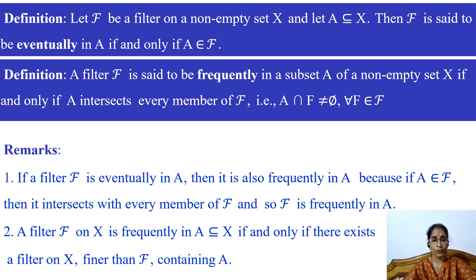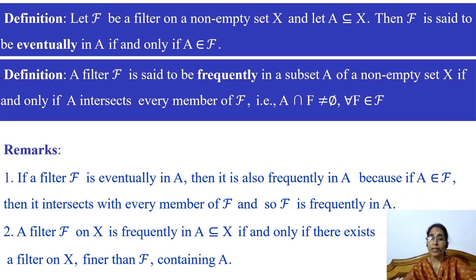Now we have two remarks. Remark one: if a filter F is eventually in A, then it is also frequently in A. Because if A belongs to F, then it intersects every member of F. We know that any intersection of any two members of F is non-empty. So if A belongs to F, then A intersects every member of F, and so F is frequently in A.